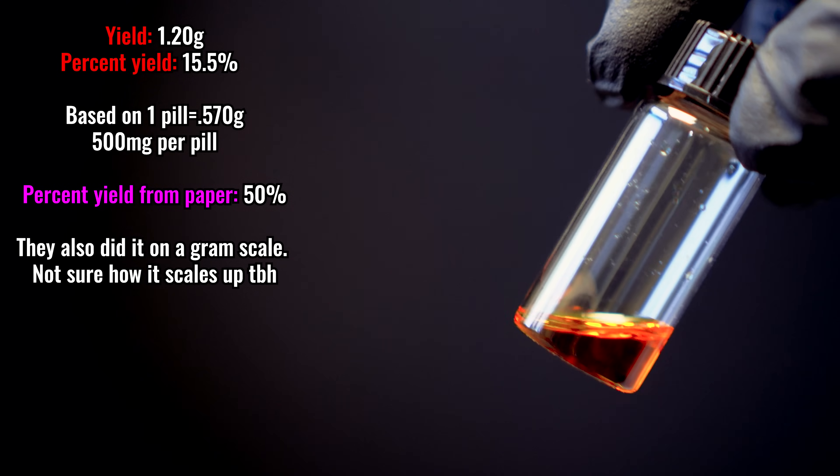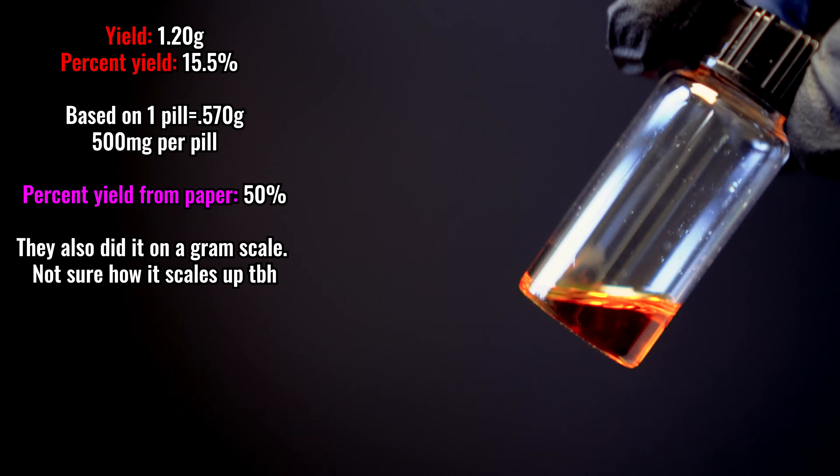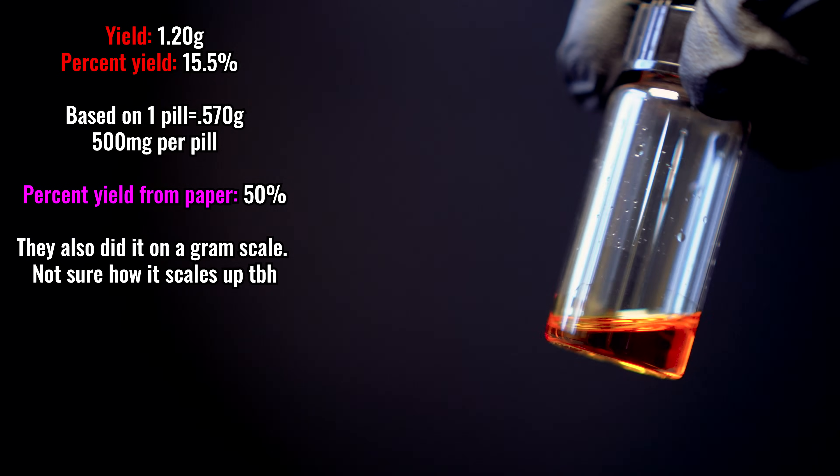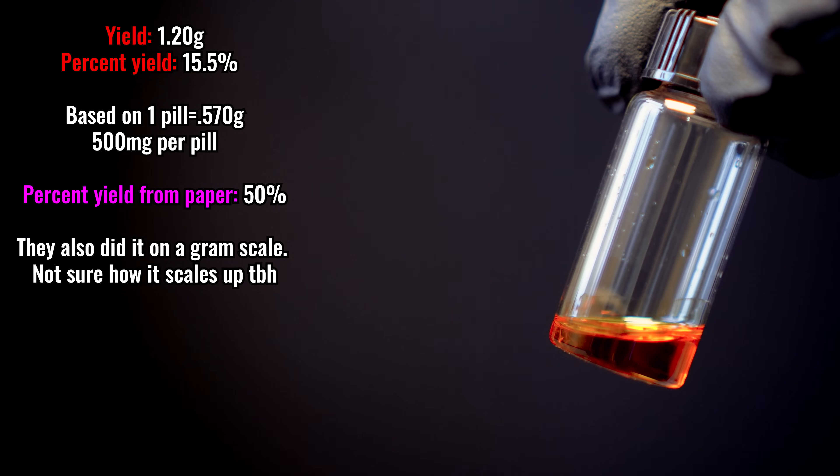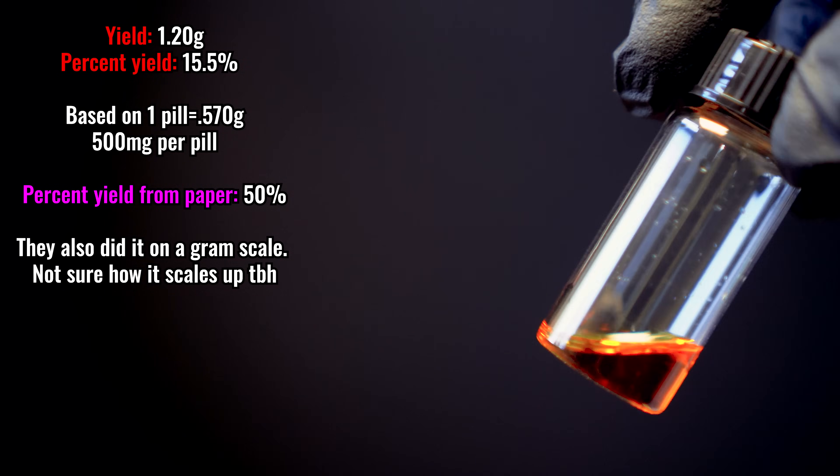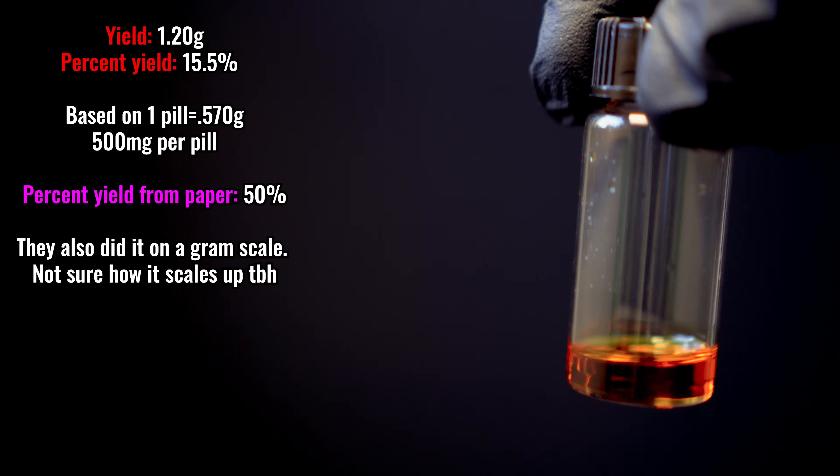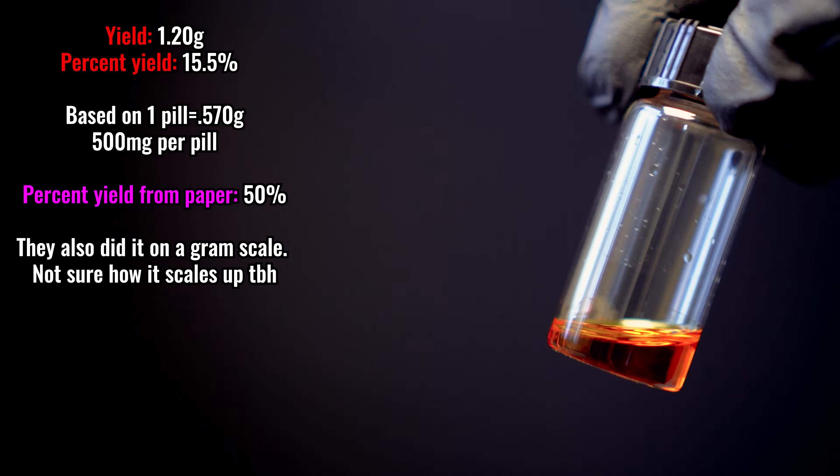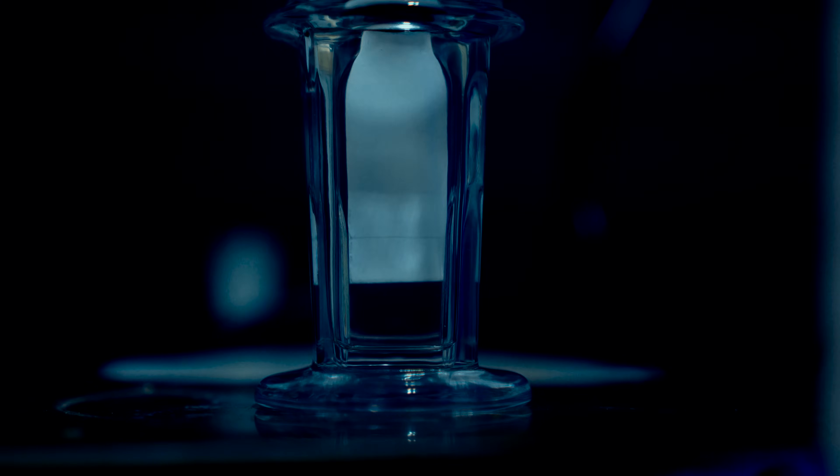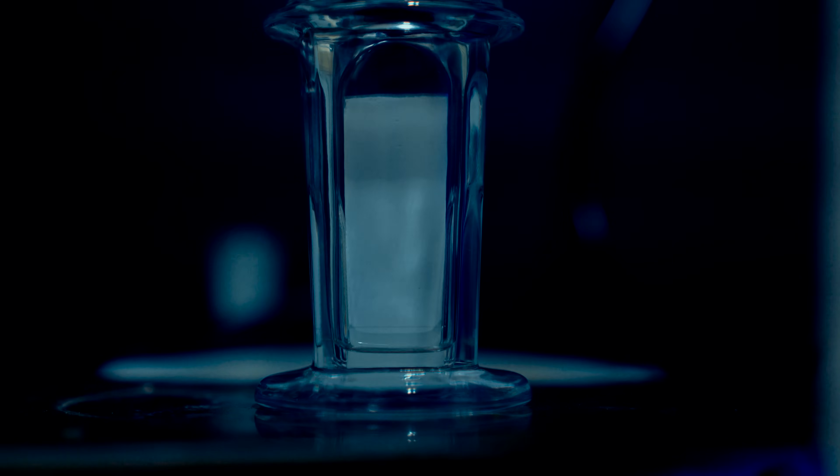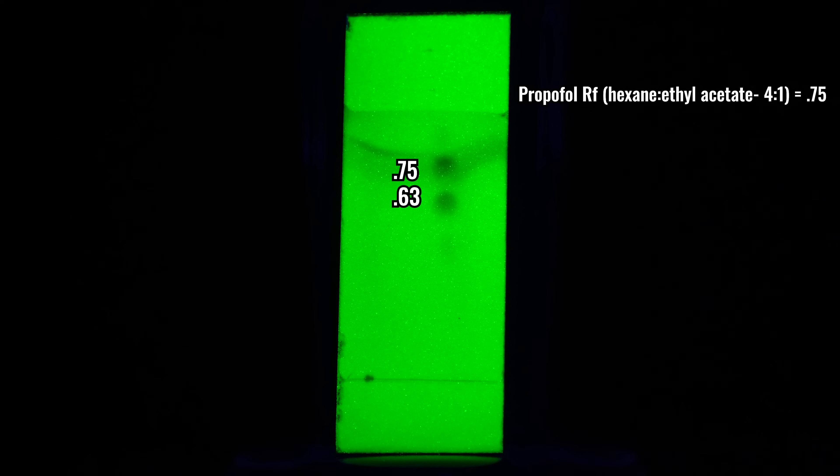Overall we got this nice translucent oil and I'm pretty happy with it. I am genuinely curious as to what the impurity is that makes it orange. I am sending this to Brent over at More Analytical to see what this actually is. This does have a phenol-like smell and I'm pretty hopeful that this is propofol. The yield is 1.20 grams and the percent yield is 15.5%. The percent yield from the paper was 50% but they only did it on a gram scale. I'm not sure if it scales up poorly or if I needed to add more water during the steam distillation. I also decided to do thin layer chromatography as the paper gave their Rf value. Based on the paper the Rf value for propofol is 0.75. This top dot has an Rf value of exactly 0.75.